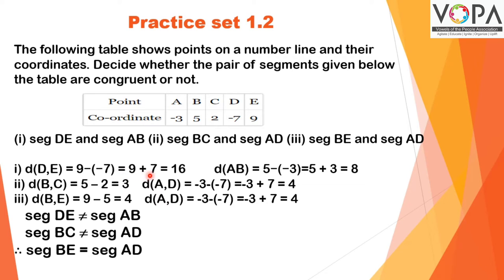Distance of AB: B is 5 and A is -3. As 5 is greater than -3, 5 - (-3) = 5 + 3 = 8. Hence segment DE is not equal to segment AB.